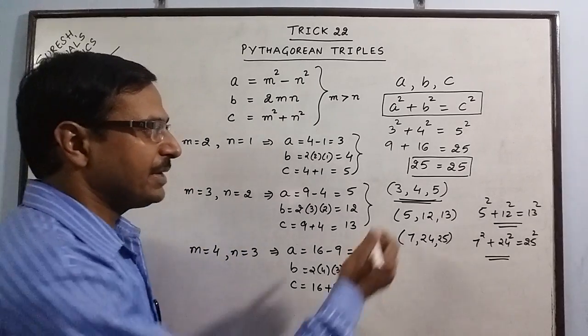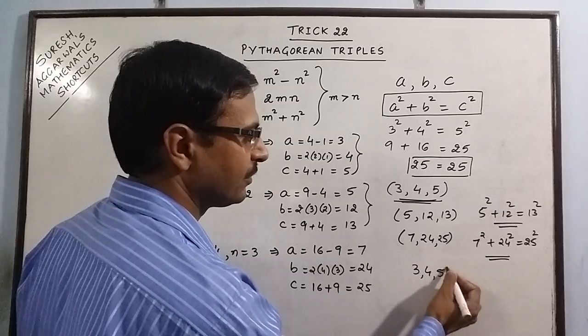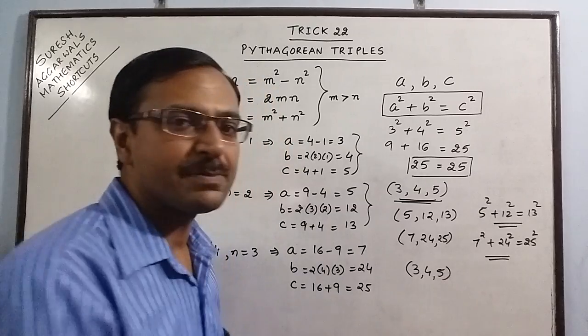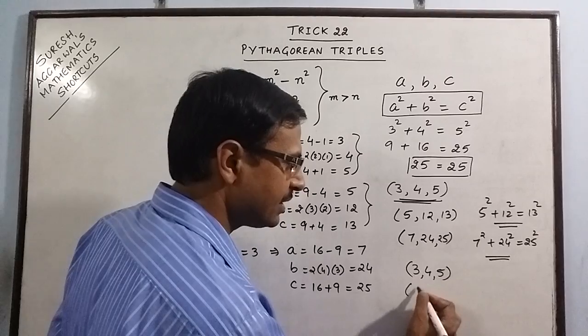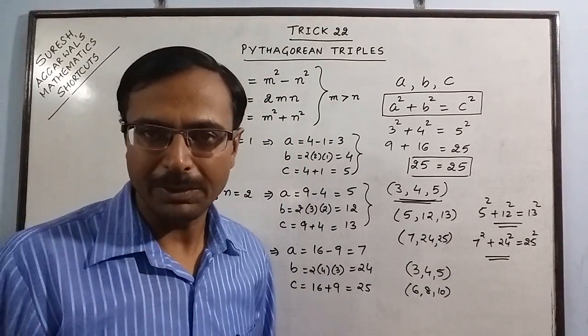Now, the basic Pythagorean triplet we talked about was 3, 4, 5. So, if we multiply these 3 numbers by any constant number, say 2, we double these 3, 6, 8 and 10. Then, this is yet another Pythagorean triplet.